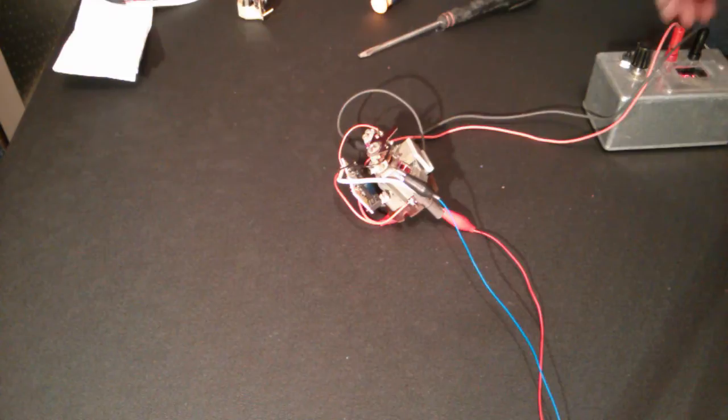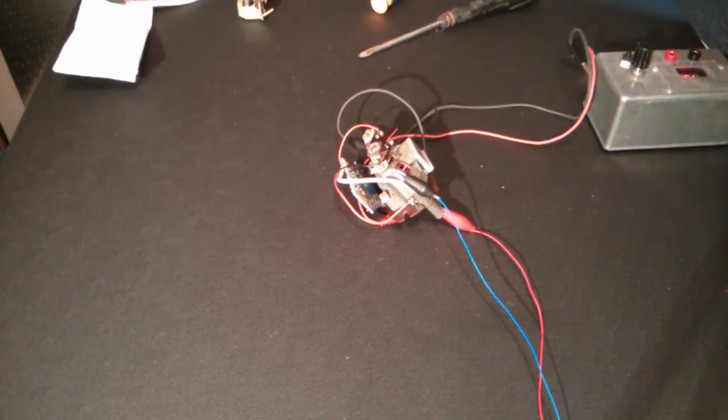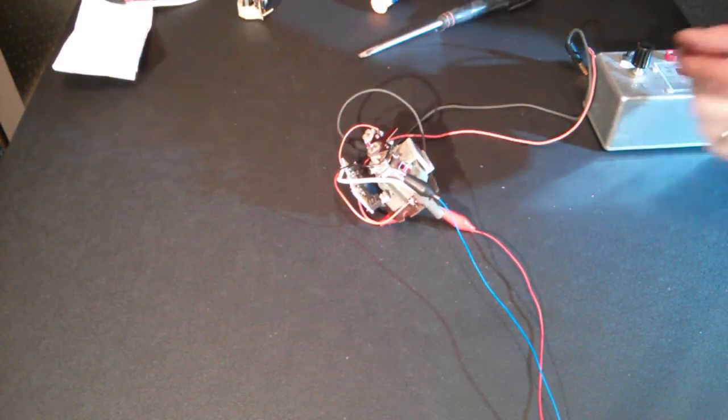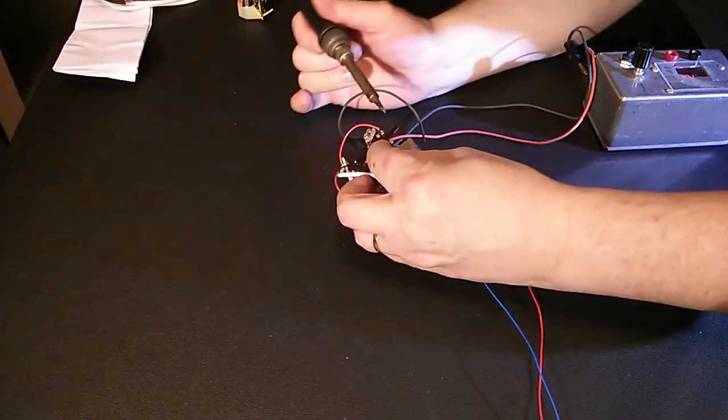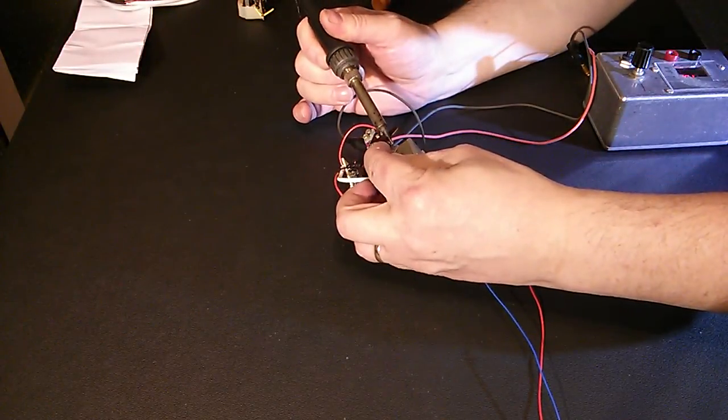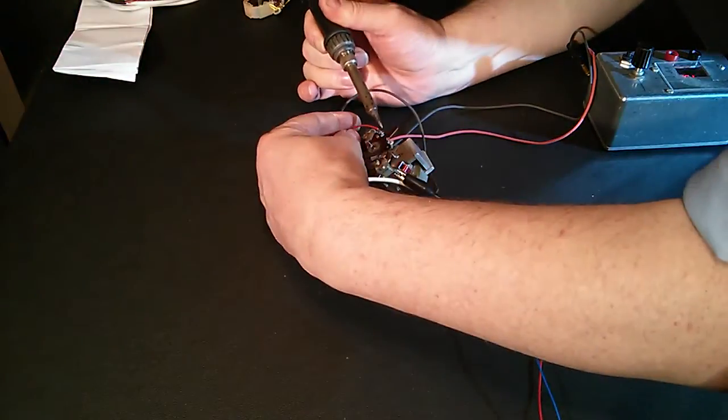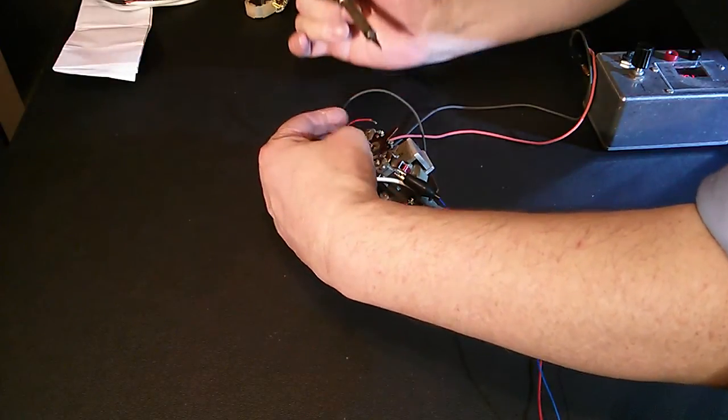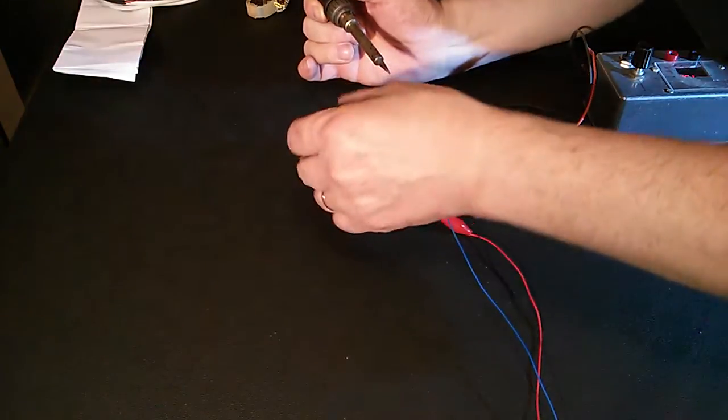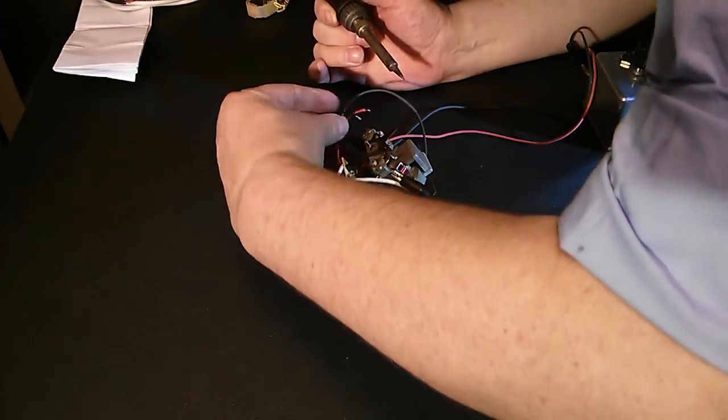So what I'm going to do now is just swap those over. I'll turn the power off first. It might seem a bit long-winded me going through this, but it happens quite often. So, we'll just drop those wires off. It's not a big deal. Just to re-solder them on the other way.